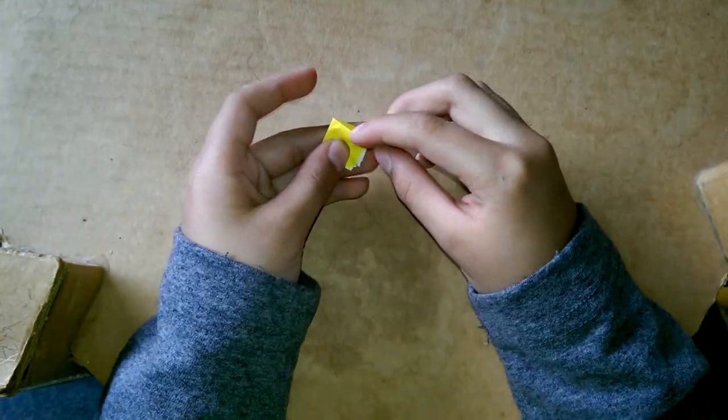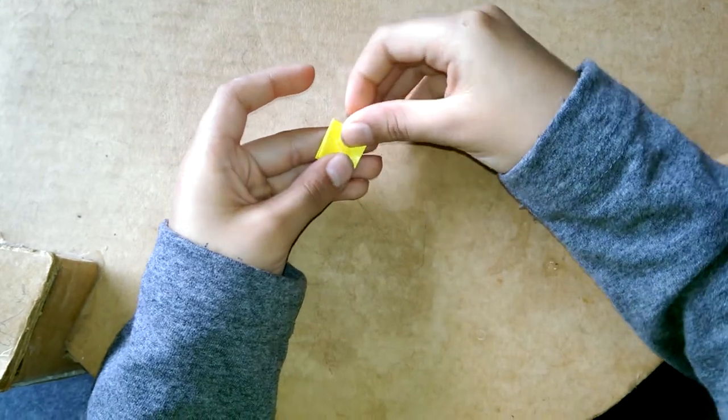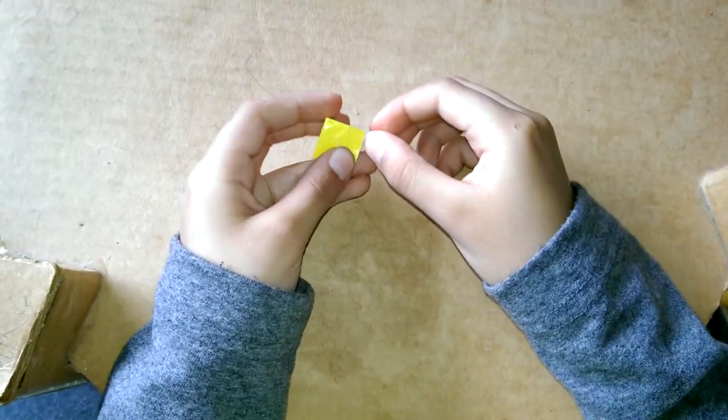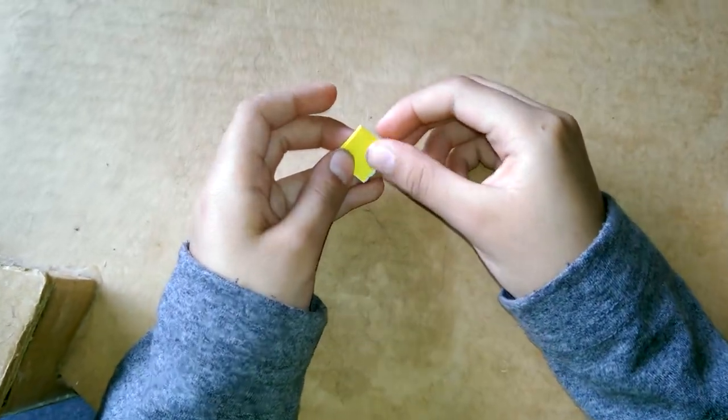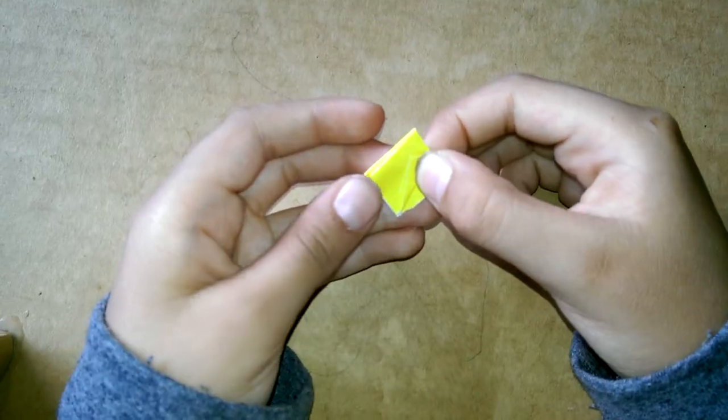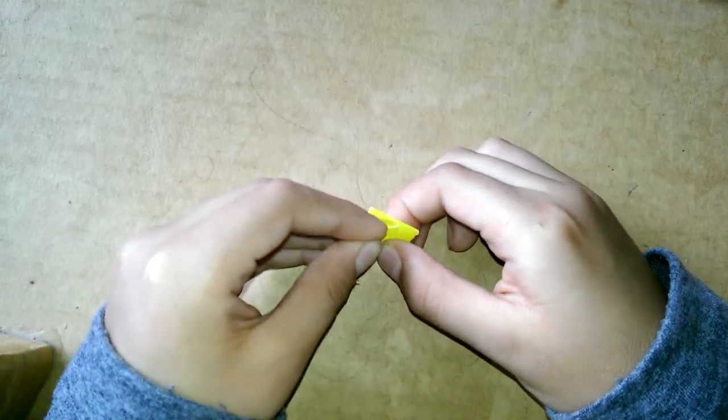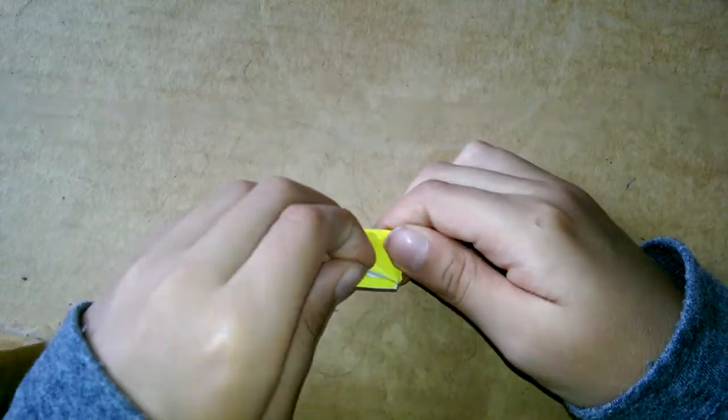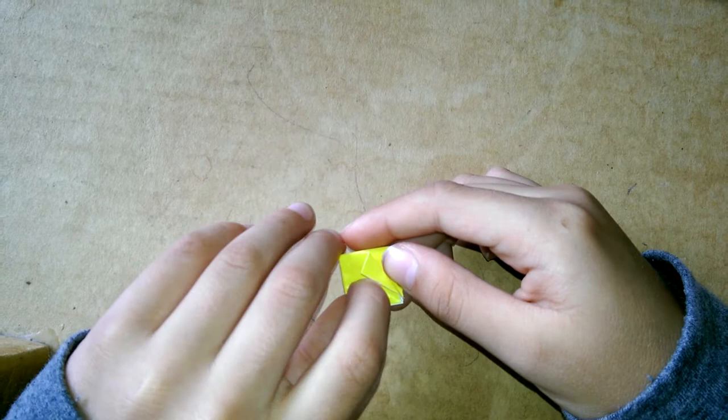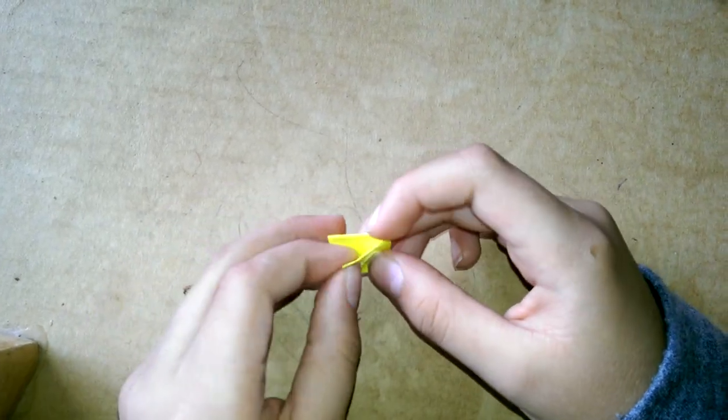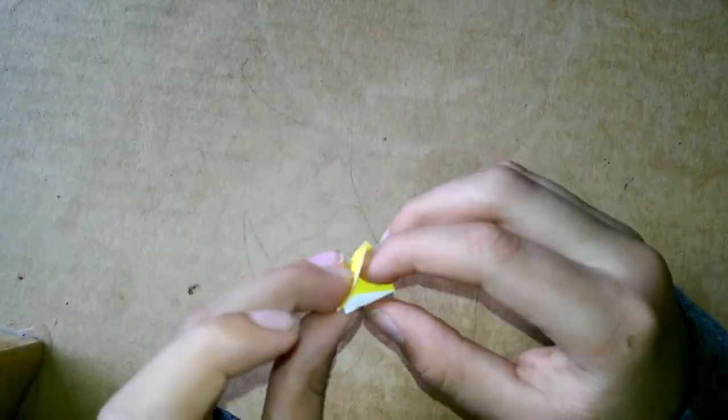Then you flip it over and fold along those lines with the flaps that are on the sides. Then you do it to the other side. And then the next fold, or the fold after that, it's going to be a little tricky because it's a small piece of paper.